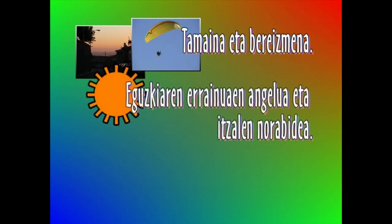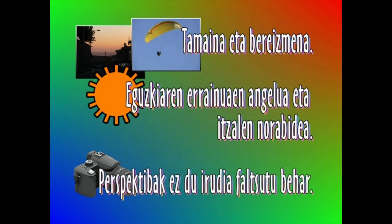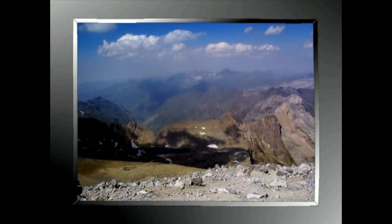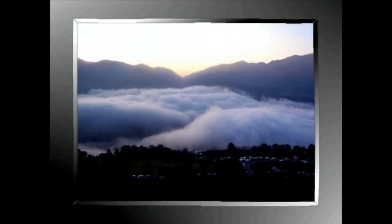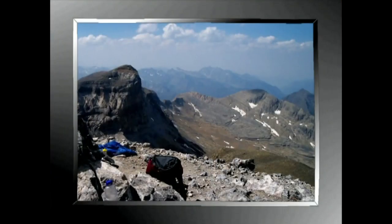Bi irudien tamaina eta bereizmena bat etorri behar dute. Eguzkiaren errainuen angelua eta itzalen norabidea bat etorri behar dute bi irudietan. Objektiboek erreproduzitzen duten perspektibak ez du irudia faltsutzen behar. Azken aholku bat: paisaien argazkiak gogoko badituzu, egin iezazu zeure zeru bilduma bat, lurrarekin edo lurrik gabe. Merezi du.